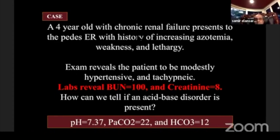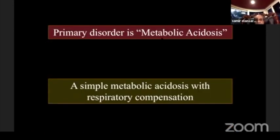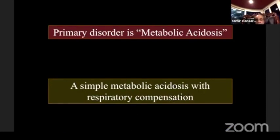Case 6: A 40-year-old with chronic renal failure. pH is 7.37, arterial CO2 is 22, HCO3 is 12 — all dropped, so this is simple metabolic acidosis, well compensated. Bicarb dropped by 12 mmHg; multiply by 1.2 gives expected CO2 drop of about 14. The measured CO2 is approximately compensated. This is a sample simple metabolic acidosis with appropriate respiratory compensation.